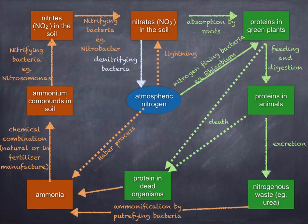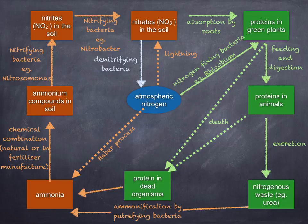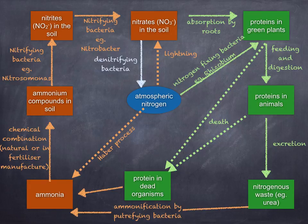Here's the summary diagram of the nitrogen cycle — it's a good idea to draw this out and go through the video again. Notice the different processes: nitrogen fixation, nitrification, and ammonification. Denitrifying bacteria convert nitrates into atmospheric nitrogen, whilst nitrogen-fixing bacteria such as rhizobium convert atmospheric nitrogen to ammonium compounds. Nitrifying bacteria then convert ammonium compounds into nitrites and then into nitrates. And that concludes our lesson.